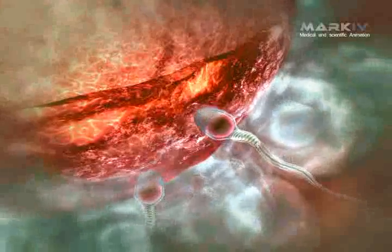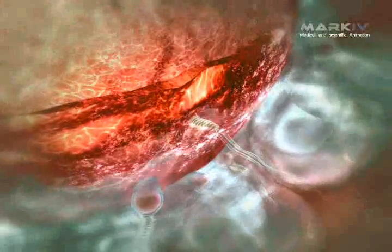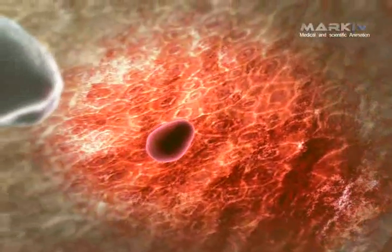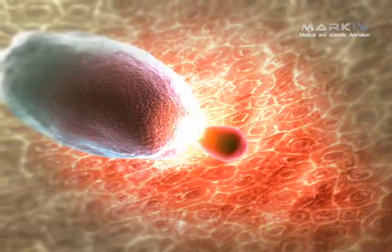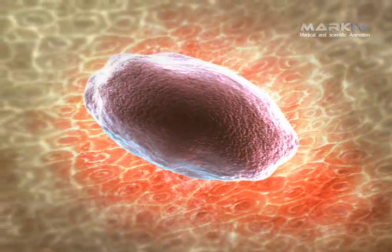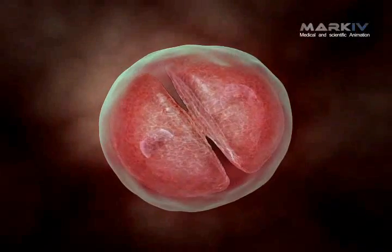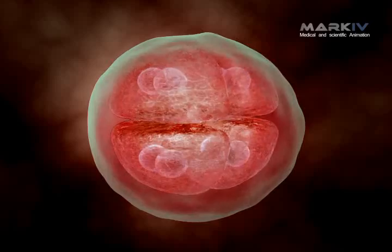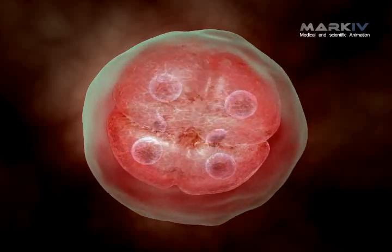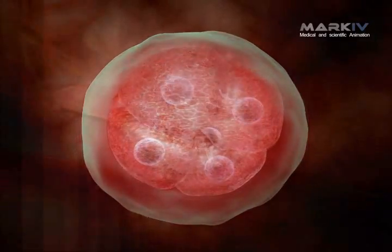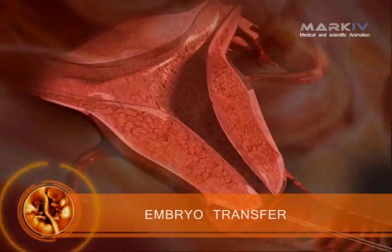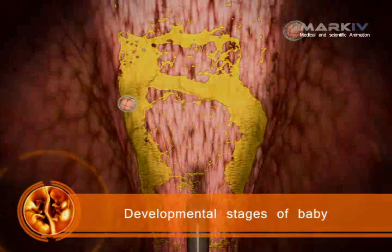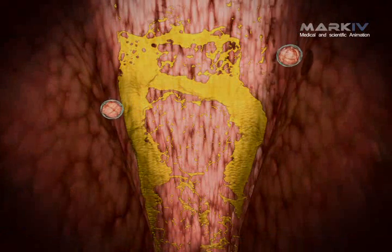The sperm penetrates into the egg to form a zygote. The zygote starts to divide into two, four, and eight cell embryos. Normally, three embryos suspended in fluid are gently placed into the womb once they have attained the eight cell stage, and two embryos get implanted in the uterus.